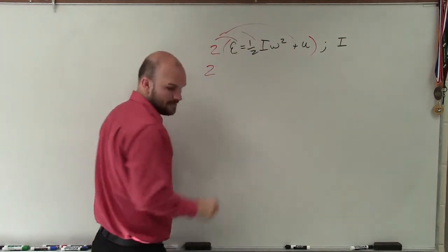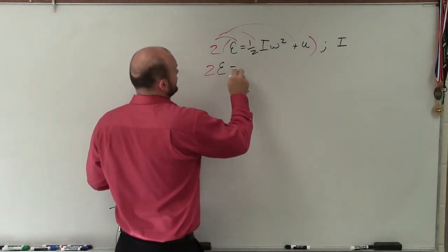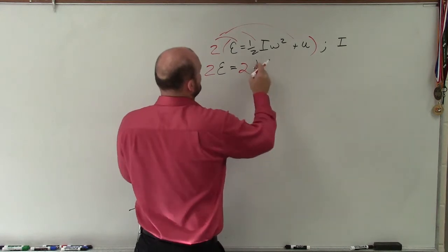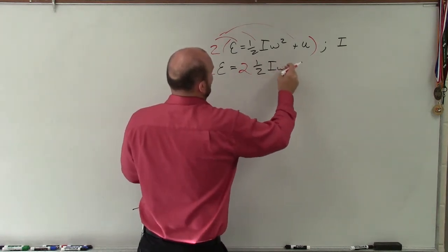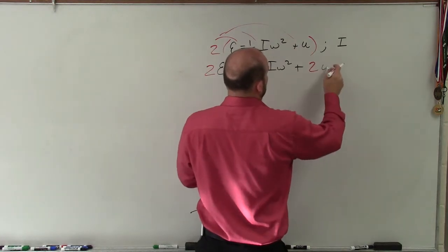Therefore, I have 2E = 2 × (1/2)Iω² + 2u.